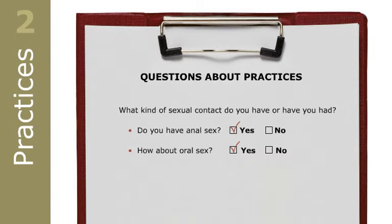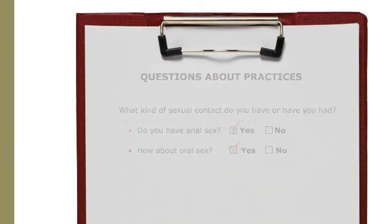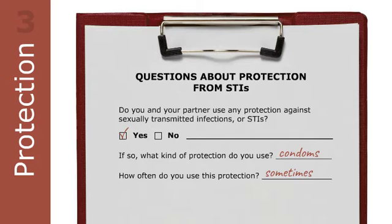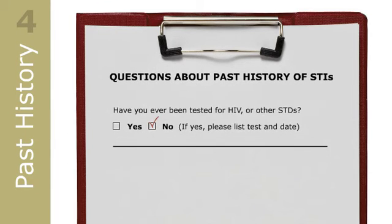You ask Brian about whether he has oral or anal sex, and whether he gives or receives for both. Brian says that he does give and receive oral sex. He says that he is always on the bottom for anal sex, which you know means that he has receptive anal sex. Obviously, you do not ask Brian about vaginal sex. Based on his answers about practices, you ask selected questions about protection from STIs and testing history. Brian responds that he uses condoms sometimes and hasn't been tested for any STIs, including HIV.